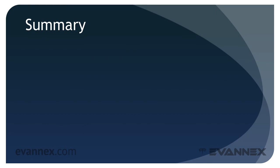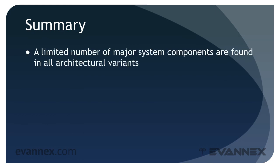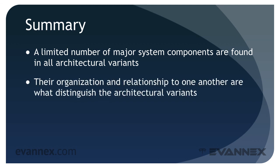Let's summarize what we've discussed. A limited number of major system components are found in all variants. Their organization and relationship to one another are what distinguish the architectural variants. Before we complete our course sequence on EVs and on EV architectures, let's take a look at example production vehicles that fall into each of these architectural categories.